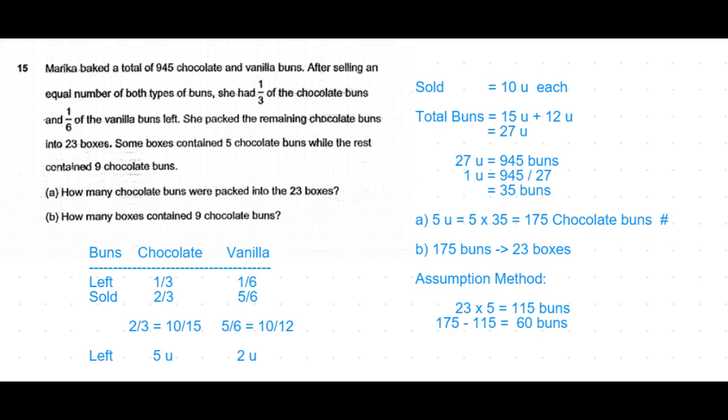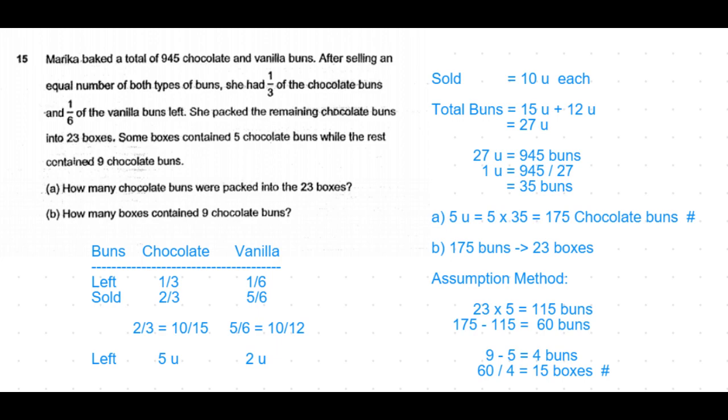So 23 times five would have been 115 buns, but we know 175 buns were left. So 175 minus 115 is 60 buns. If each of the boxes that had five buns is removed and replaced with nine buns, that means four more buns would have increased.